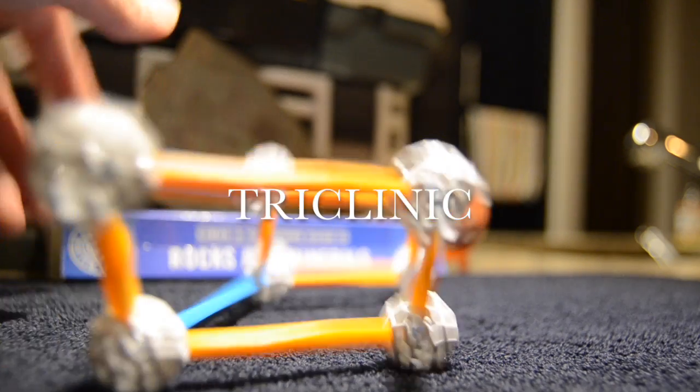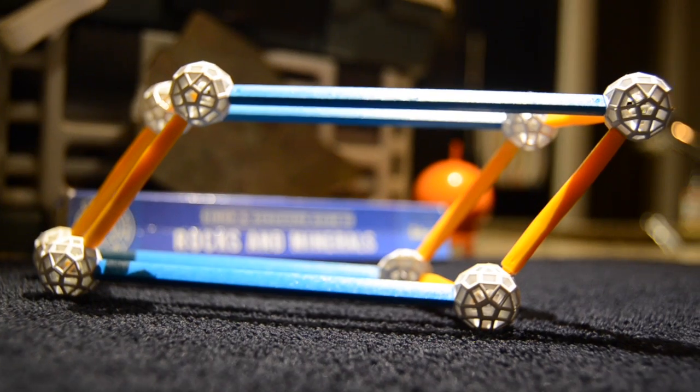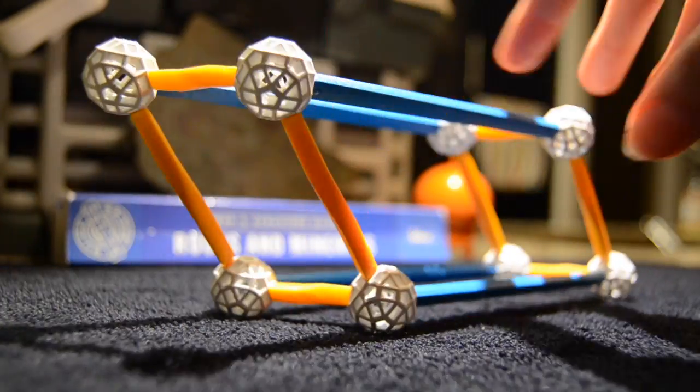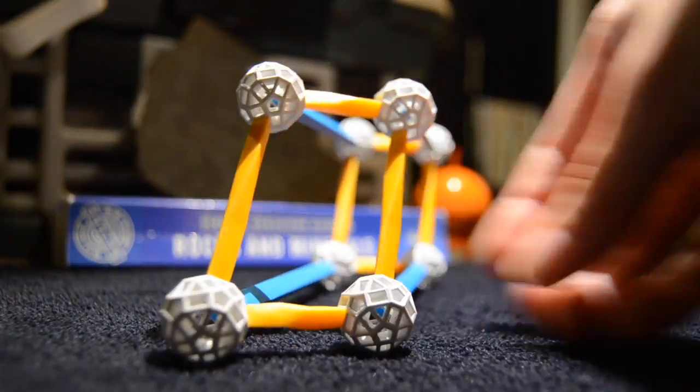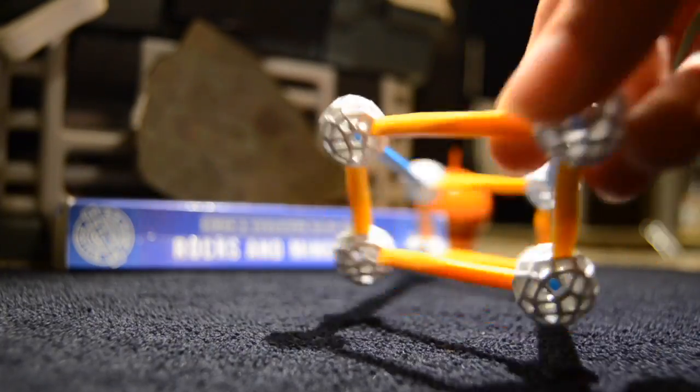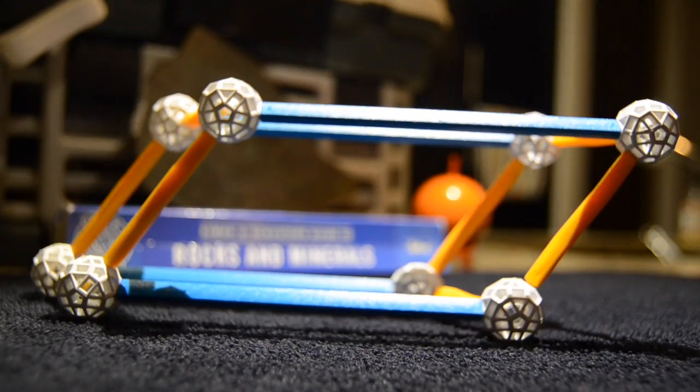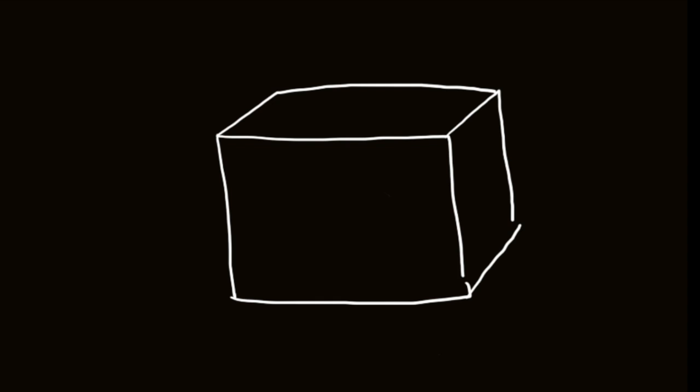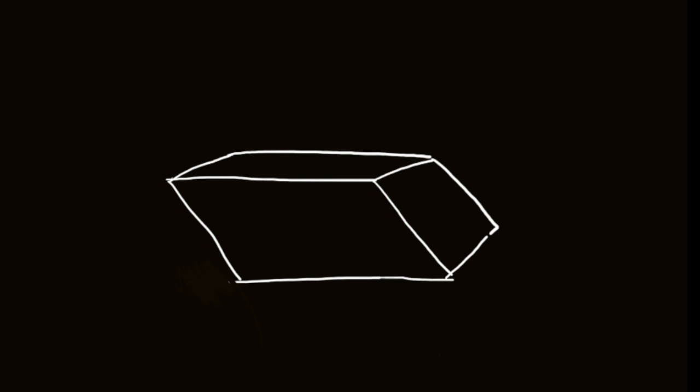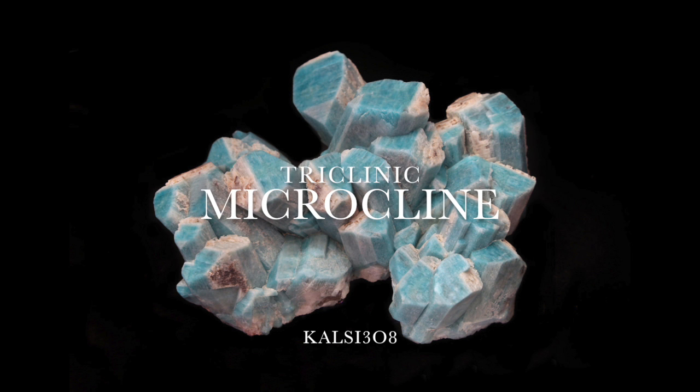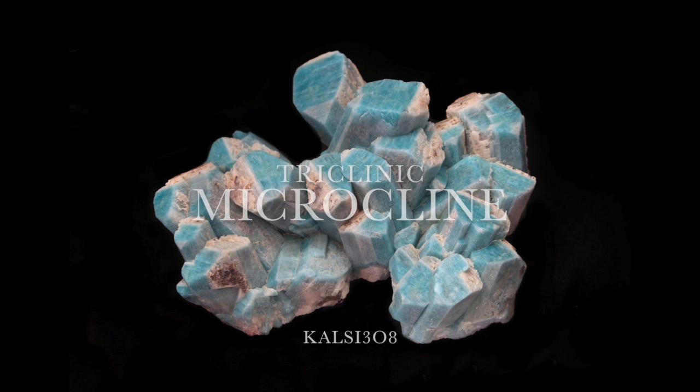The triclinic system has no equal axes and no equal angles. Imagine the shoebox again. In a triclinic system, the shoebox will be slanted in two directions. Microcline is an example of a mineral that belongs to the triclinic system.